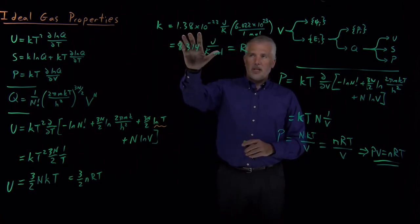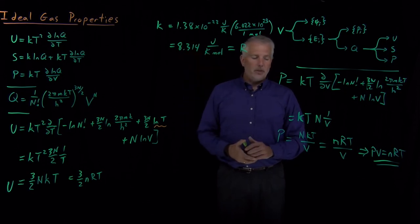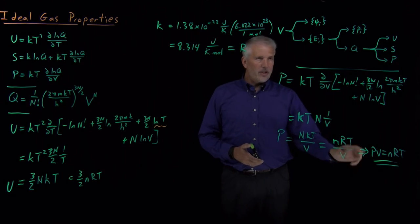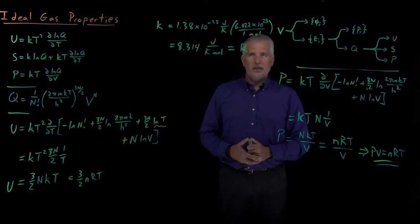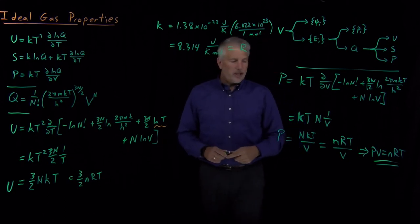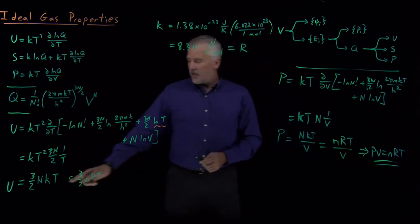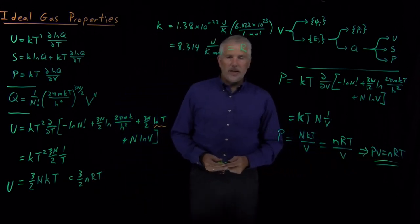It turns out that Boltzmann's constant has this value because that's the value that predicts the results that we do see in the real world when we use this equation that came theoretically originally from quantum mechanics for 3D particle in a box. So we've been able to obtain two important results, the energy of an ideal gas and the pressure of an ideal gas.